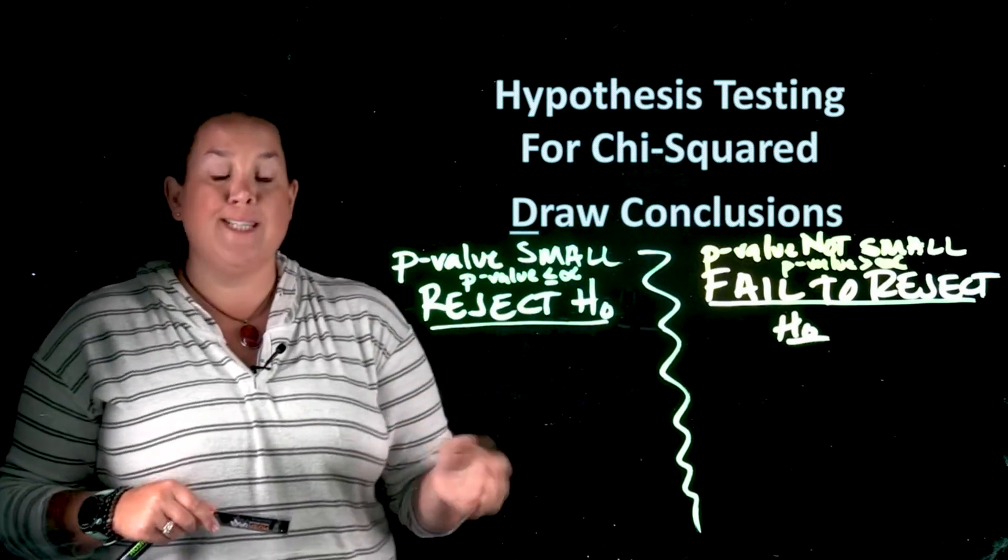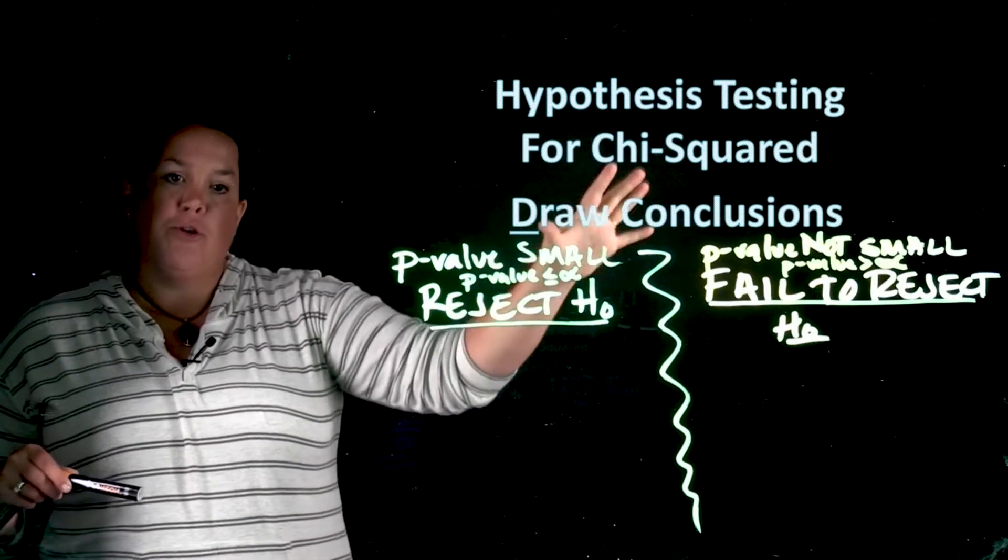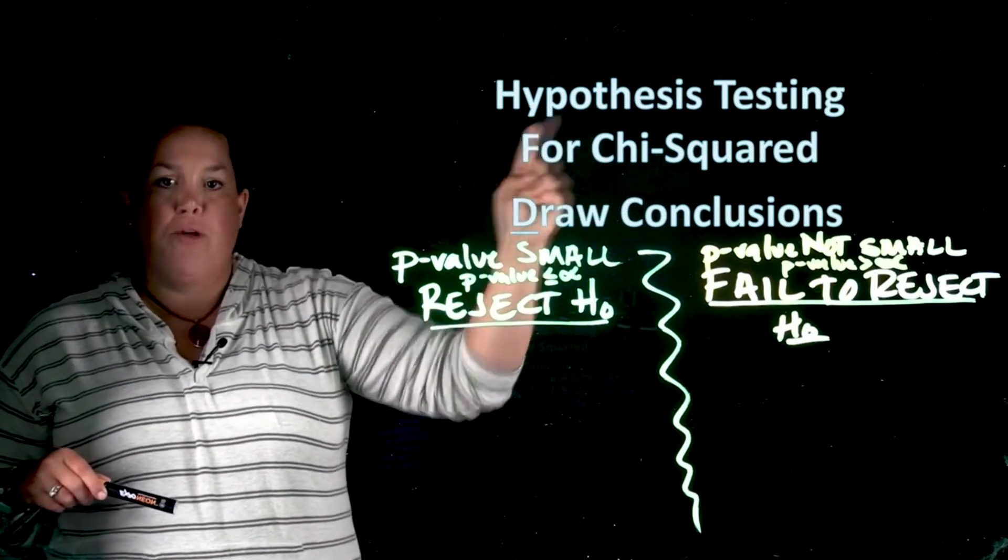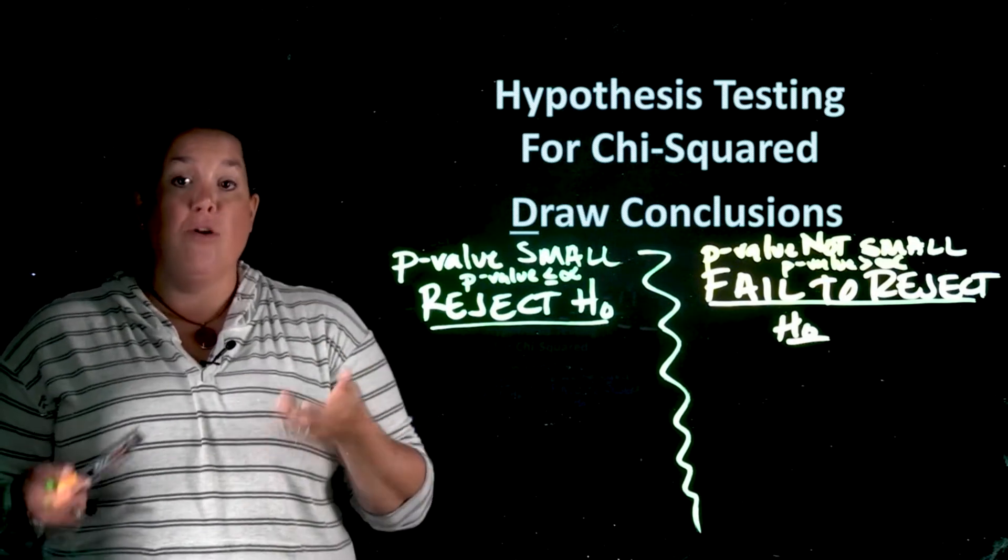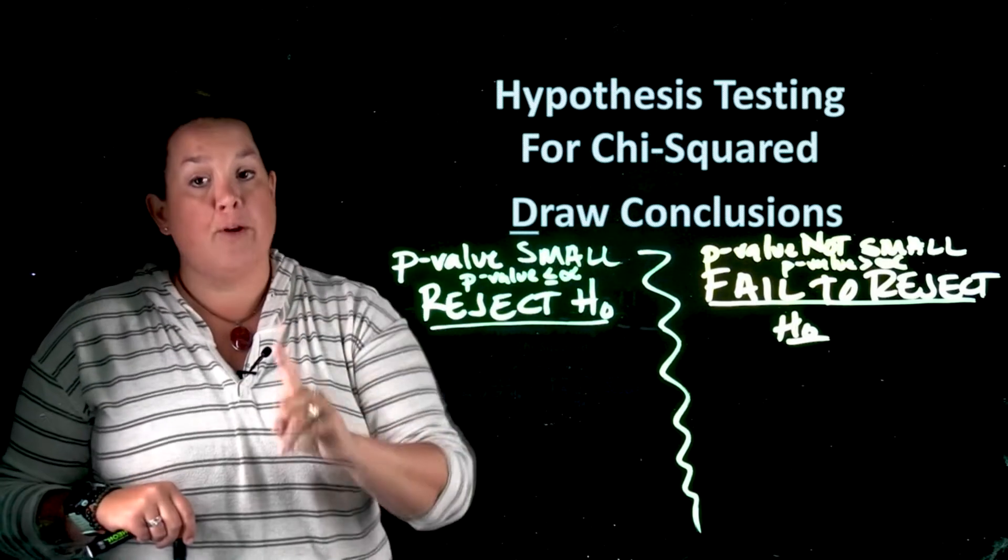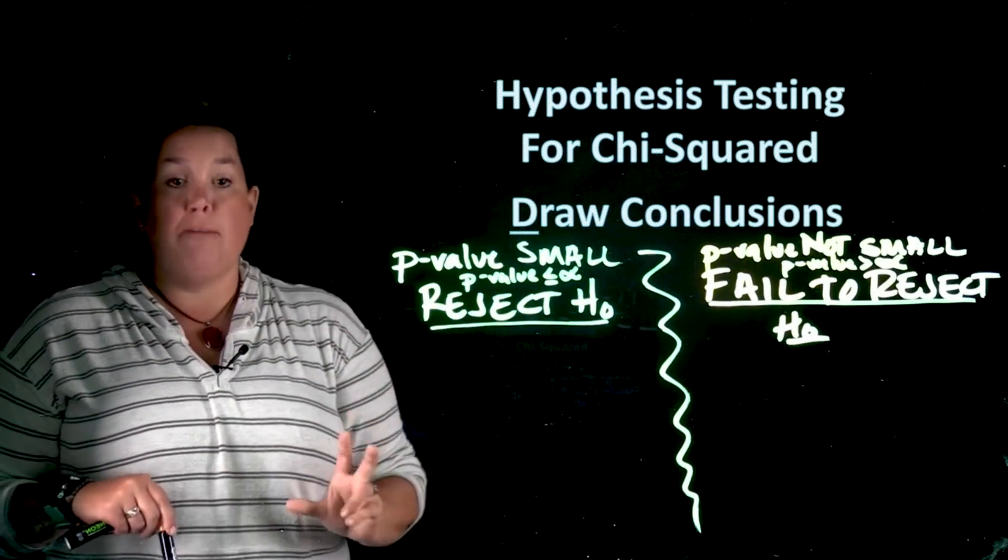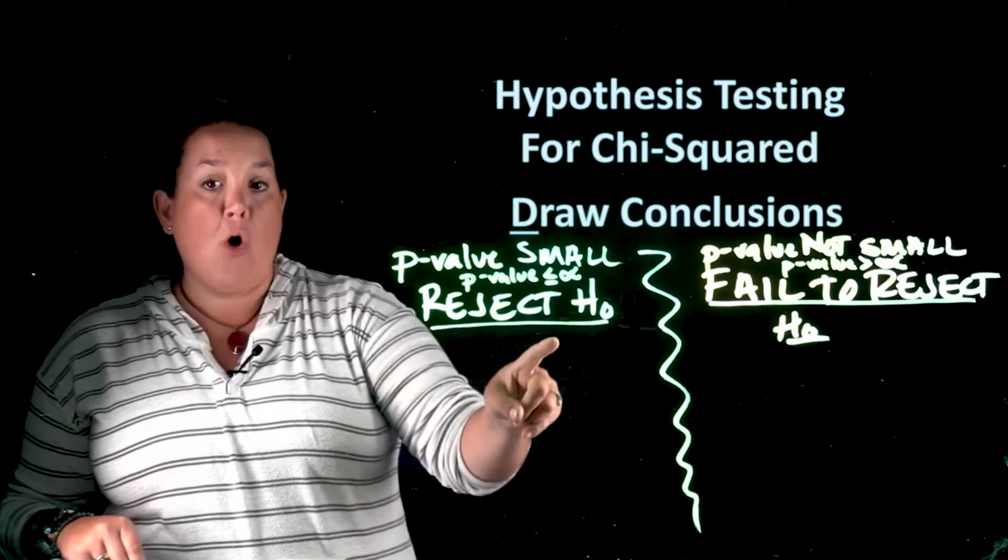Now we're into drawing conclusions. Okay, so always when you're drawing conclusions, particularly with a hypothesis test, your goal is to actually talk about how much evidence you have for the alternative. So you make the decision on the null, but in the end you talk about how much evidence you have for the alternative.